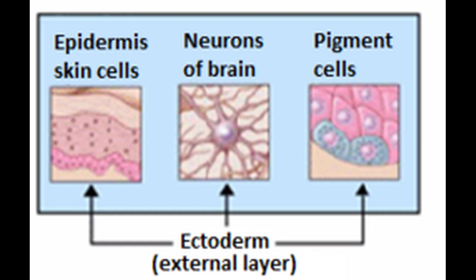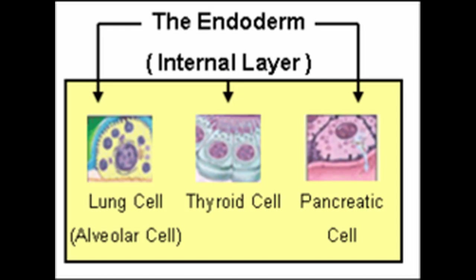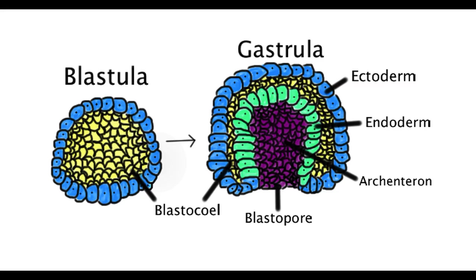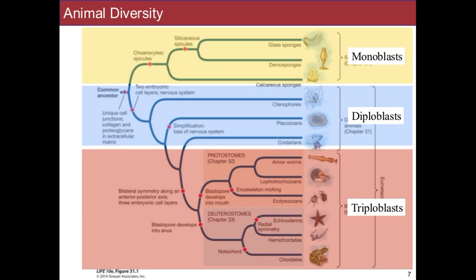In vertebrates, the ectoderm gives rise to the epidermis, nervous system, and neural crest. Meanwhile, the endoderm gives rise to the epithelium of the digestive and respiratory systems. The internal space of the gastrula is called the archenteron, and the opening to it is called the blastopore. In most ctenophores and cnidarians, the archenteron doesn't connect to the endoderm a second time, so waste is expelled back through the mouth. Imagine if humans had to do such a thing.